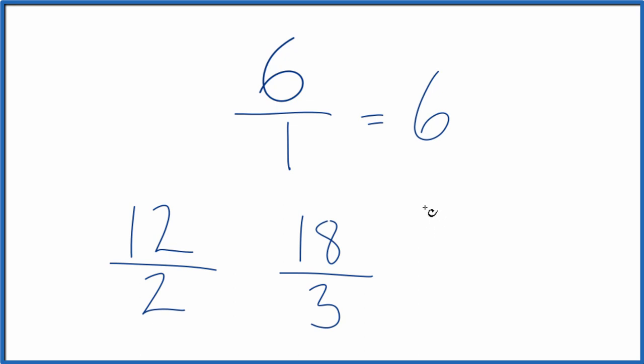Let's do one more. Let's multiply the numerator and then the denominator by seven. Seven times six, that's 42. And then seven times one is seven. So all of these are equivalent fractions for six.